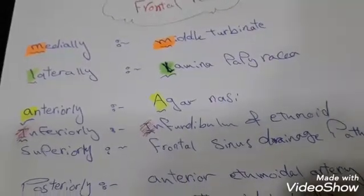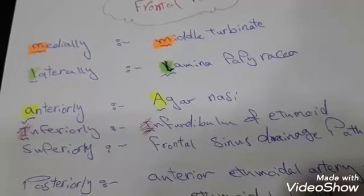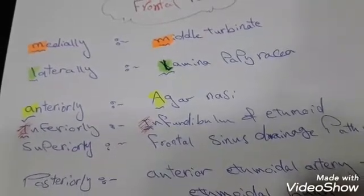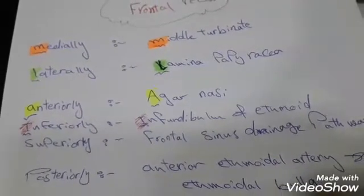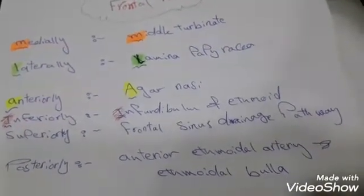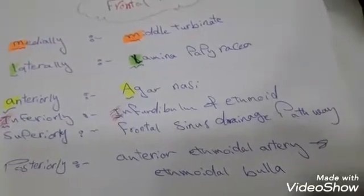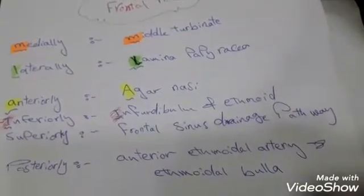turbinate, laterally lamina papyracea, anteriorly agar nasi, inferiorly infundibulum of ethmoid bone, superiorly frontal sinus drainage pathway, and posteriorly anterior ethmoidal artery and ethmoidal bulla. Thank you.